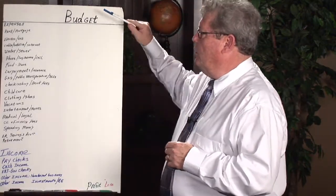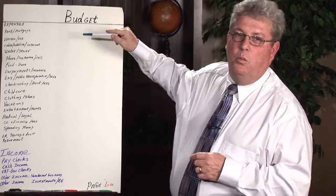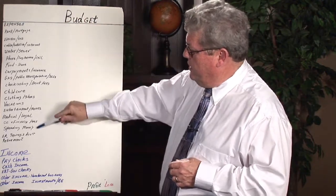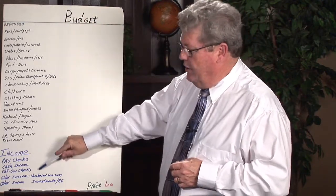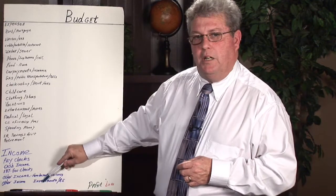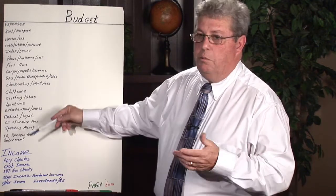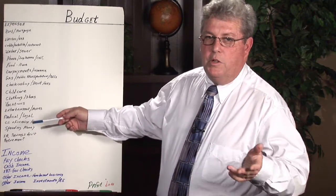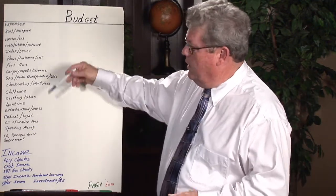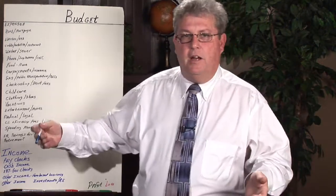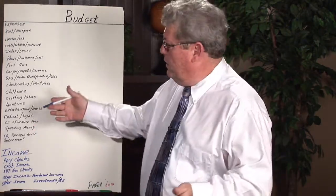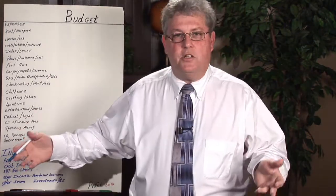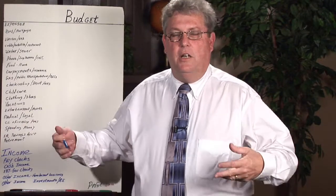First of all, let's drop back to what is a budget. A budget is simply listing your expenses and listing all your income. Now, depending upon what you do, whether it's personal or business, these will vary, but generally you have things such as rent and mortgage and your expenses such as your telephones and your electric.